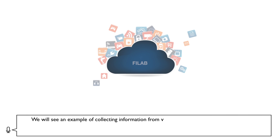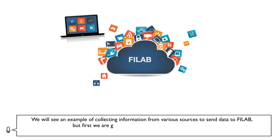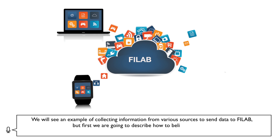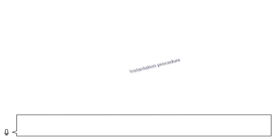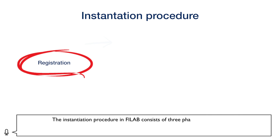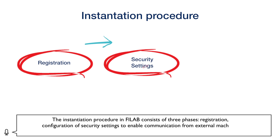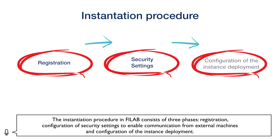We will see an example of collecting information from various sources to send data to FiLab, but first we are going to describe how to deploy instances of a FIWARE component like Context Broker. The instantiation procedure in FiLab consists of three phases: registration, configuration of security settings to enable communication from external machines, and configuration of the instance deployment.